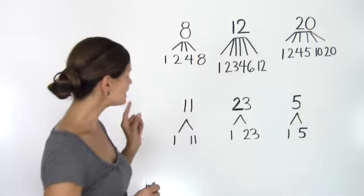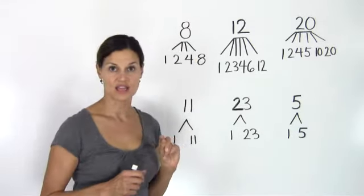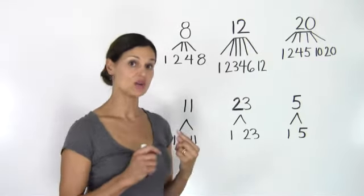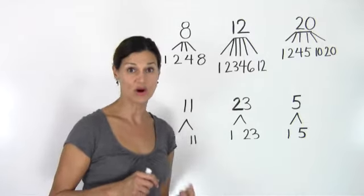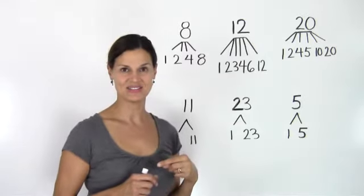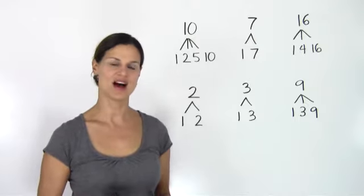Now composite numbers are numbers with more than two factors. So in addition to the number itself and 1, a composite number has at least one more whole number that divides evenly into itself. Let's take a look at a few more examples of prime and composite numbers.